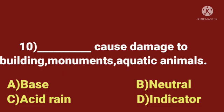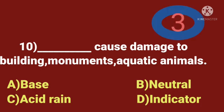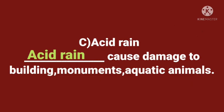Tenth question. Dash causes damage to buildings, monuments, and aquatic animals. A. Base. B. Neutral. C. Acid. D. Indicator. Time starts now. The answer is acid rain. Acid rain causes damage to buildings, monuments, and aquatic animals.